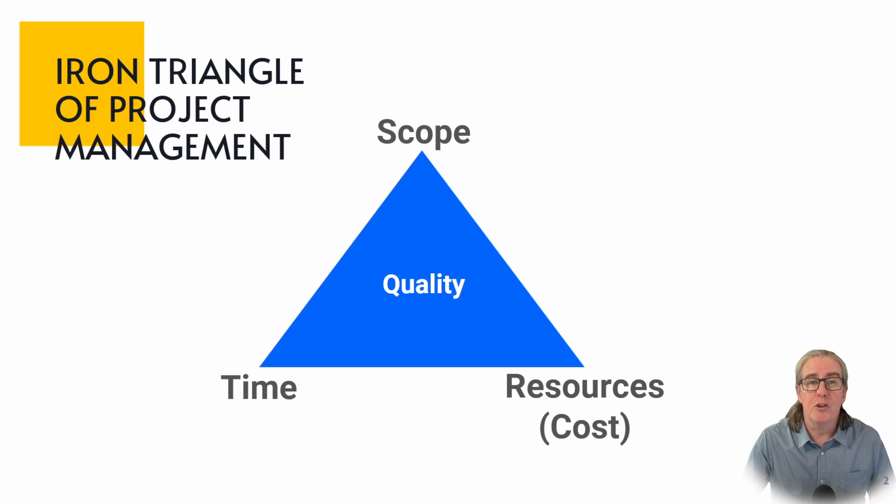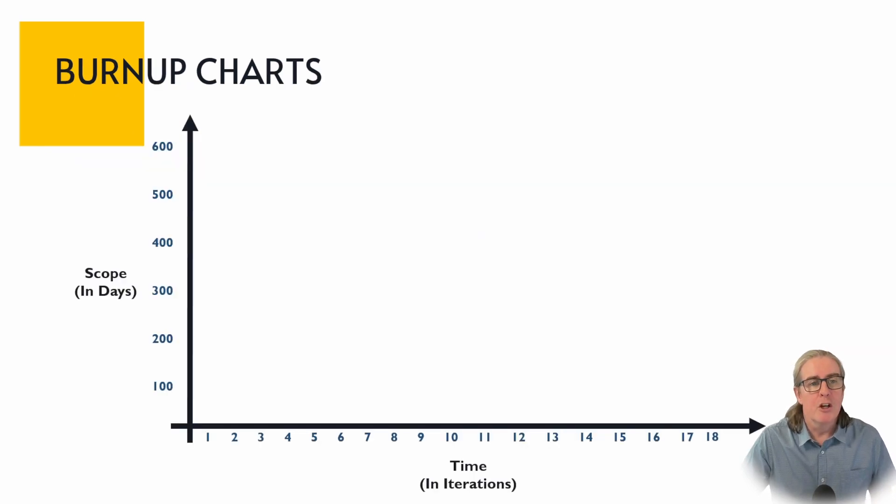So let's have a look then about how you can use these within a burn-up chart. So here's our typical burn-up chart. On the x-axis here we've got scope and we're calling that in days and in this axis we've got up to 600 days worth of work. On the bottom of the y-axis we've got time and here time we're calling this in iterations. Now iterations could be different depending on the organization that you're in. It could be weeks, it could be two-week sprints, it could be months, it doesn't really matter. It's that point in time when you're reflecting on the project to have a look to see how things have gone and where things are going in the future.